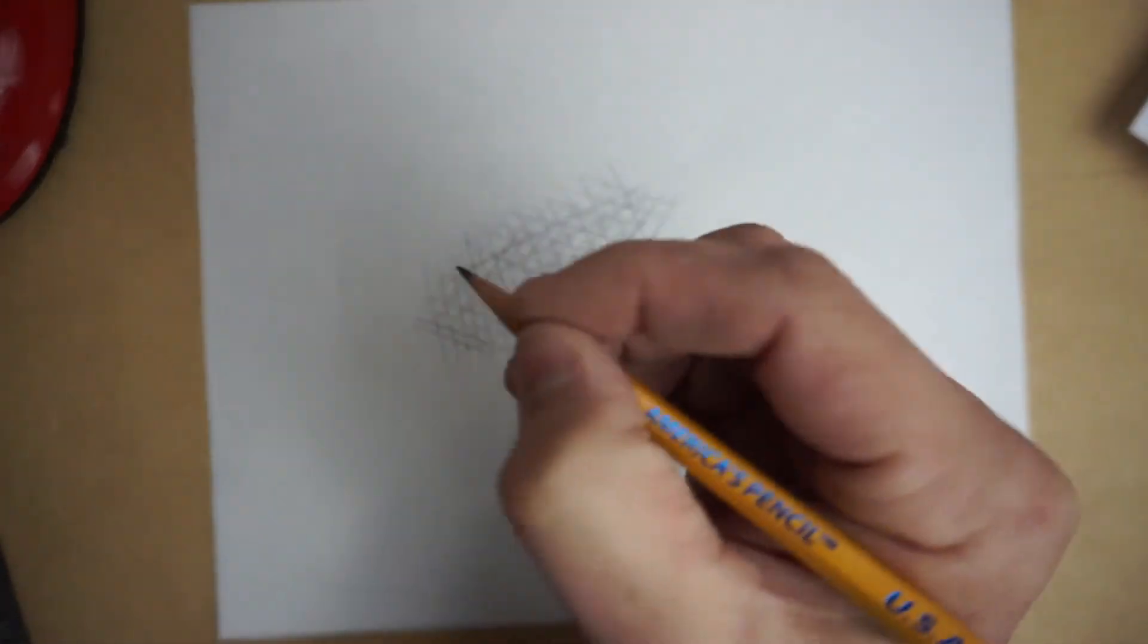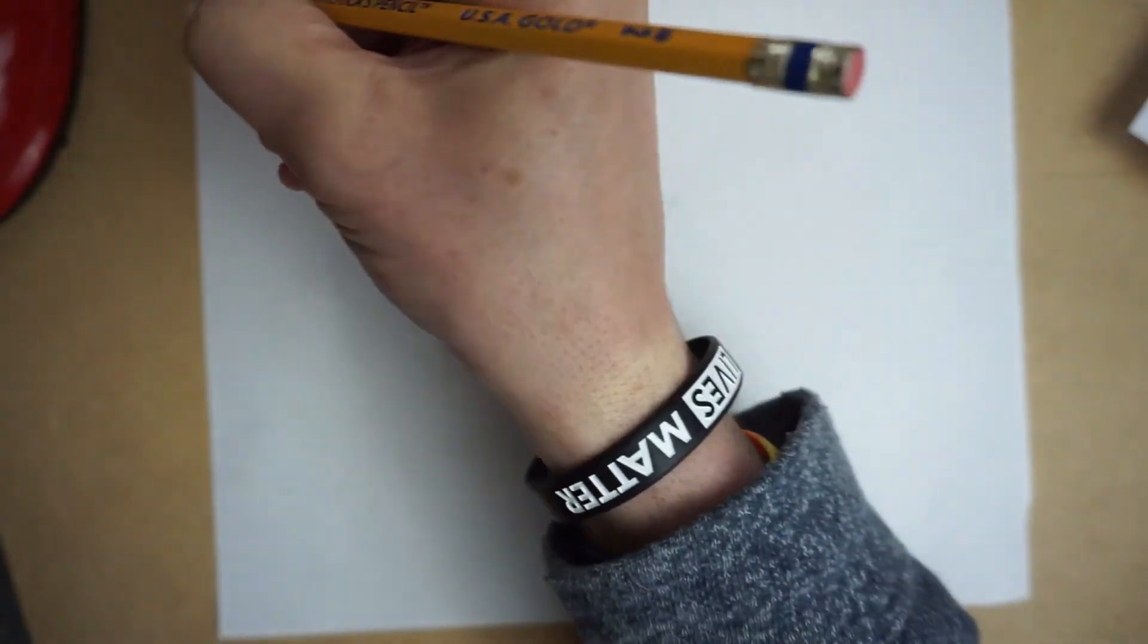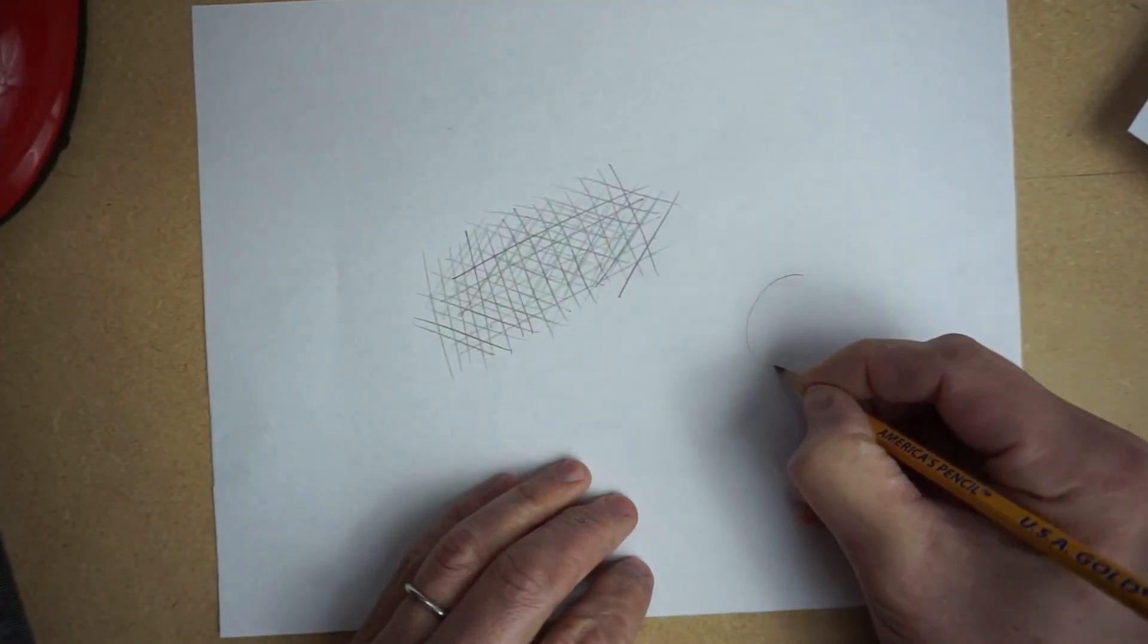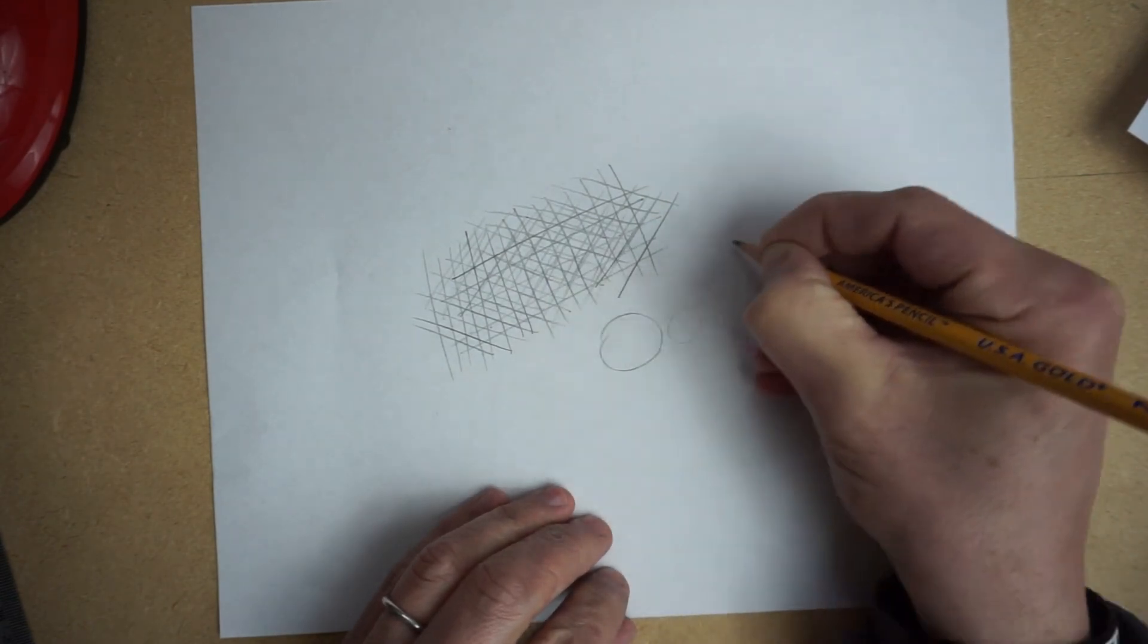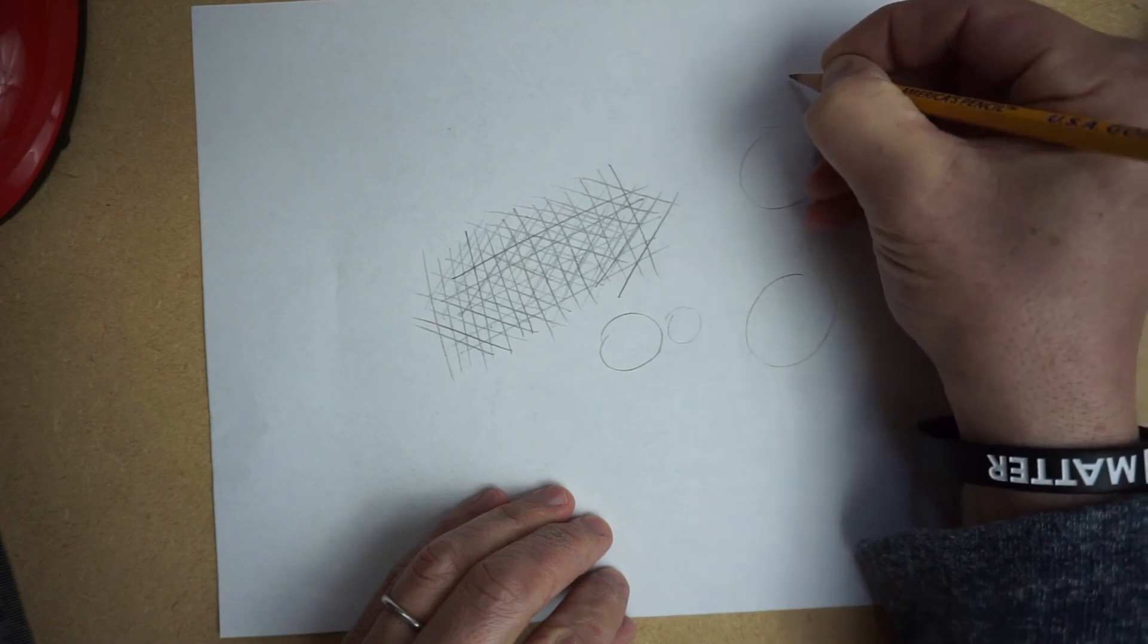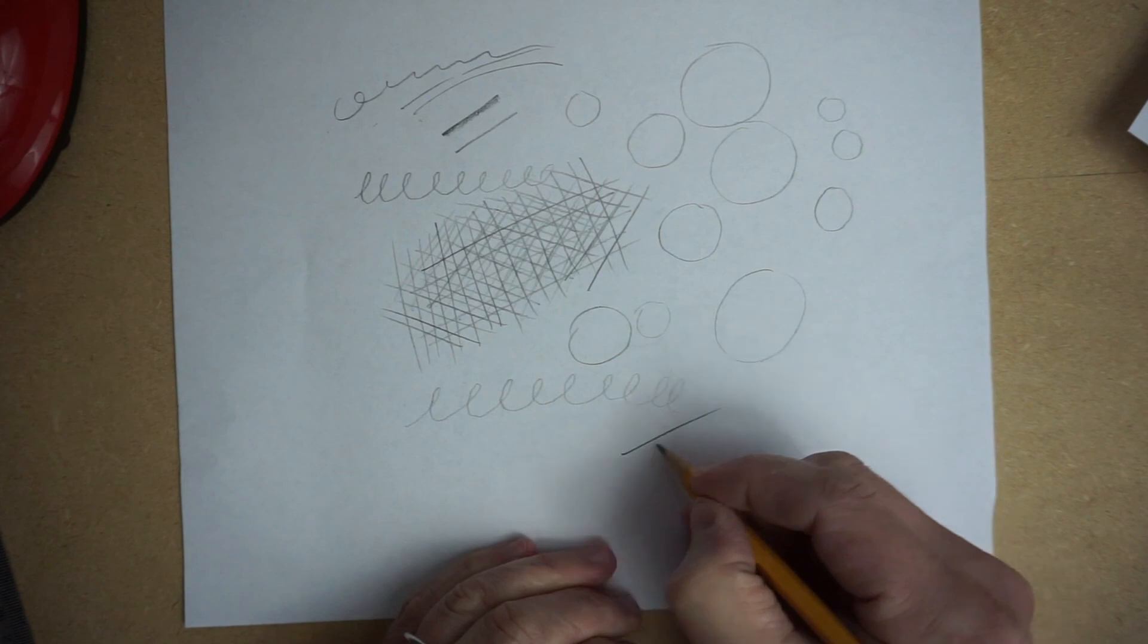The other thing that works really well, and that again is holding your wrist straight and letting movement come from your elbow and your shoulders, is drawing circles. Trying to draw good circles—small ones, big ones. Try to get good circles. It's really great for teaching yourself control. For now, just keep practicing those lines.